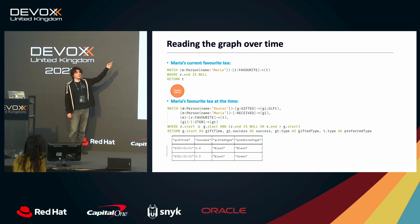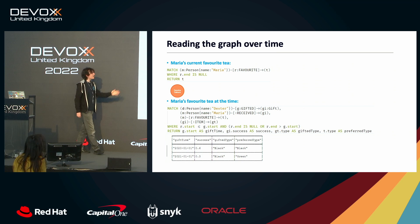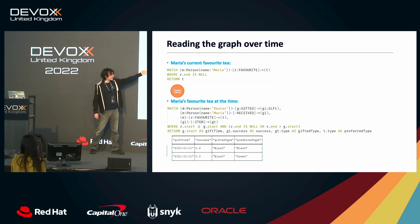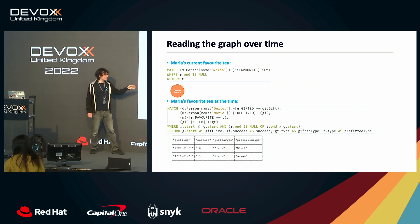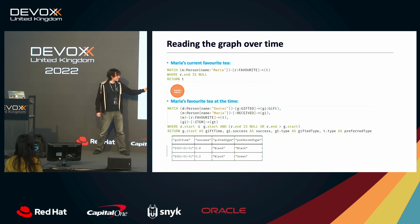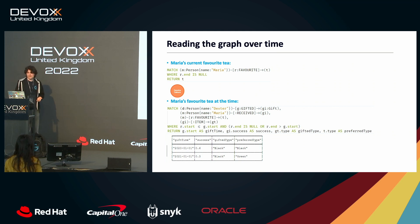Most of the time you'll only want to look at one view — probably the latest. In this model that's simple: just look for relationships where there's no end date — that means it's still the active one. We can also ask what Maria's favorite tea was at the time of each gifting event, using the start and end timestamps. This gives us a table showing a 0.6 success rate when I gave her black tea and she liked black tea, and 0.3 when I gave her black tea but she preferred green.